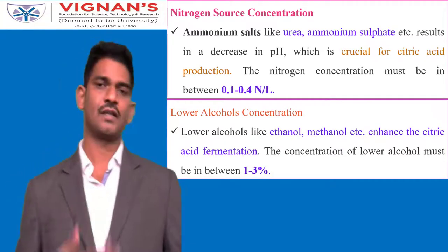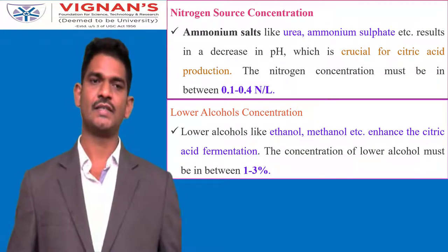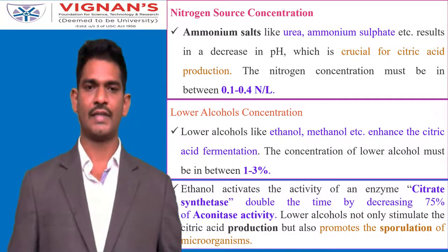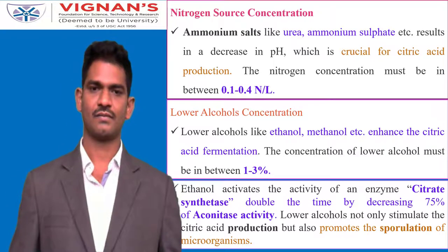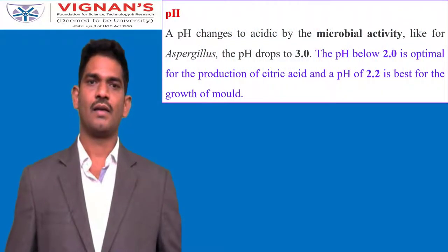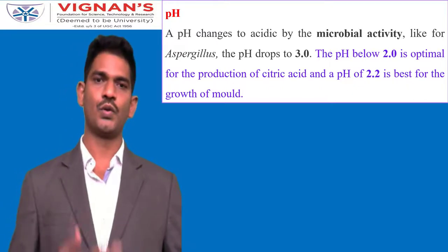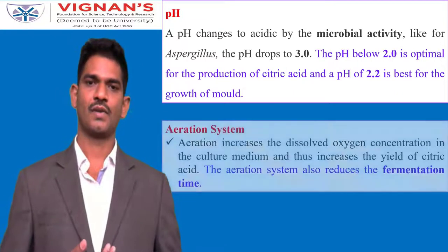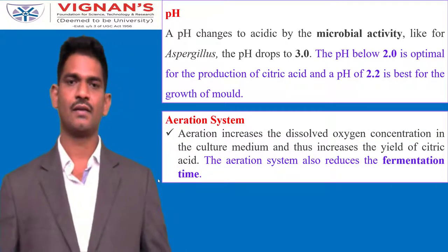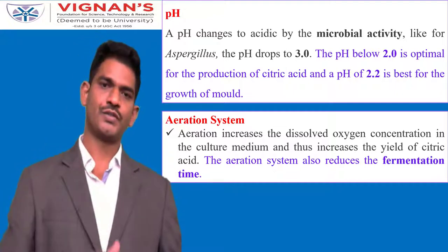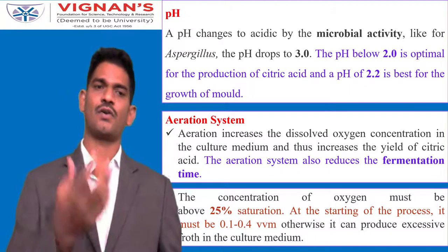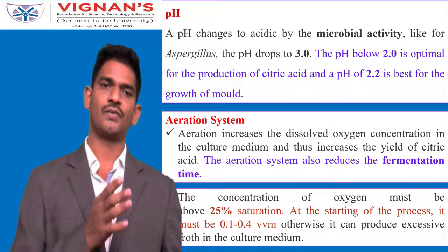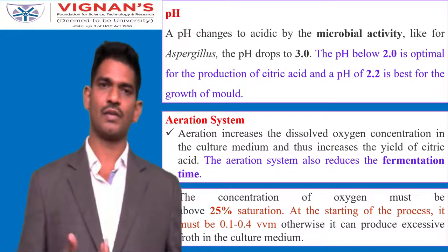Addition of lower concentrations of alcohols like ethanol and methanol is very important. Ethanol enhances the biosynthesis of citric acid by enhancing the activity of citrate synthase. Regarding pH, below 2 is optimal for production of citric acid, while pH 2.2 is best for growing the fungus. The aeration system is essential since the process is aerobic; adequate oxygen supply also reduces overall fermentation time. Oxygen concentration must be above 25% of saturation, with aeration at 0.1 to 0.4 VVM at the start of the process.